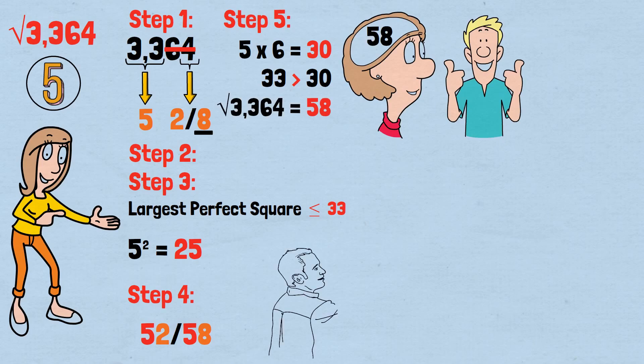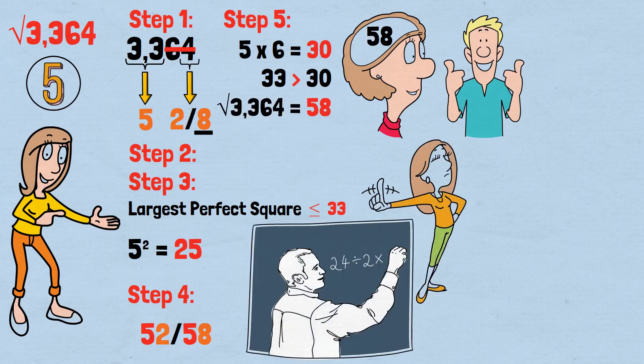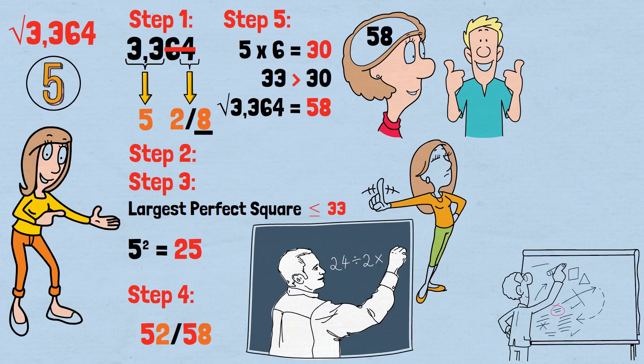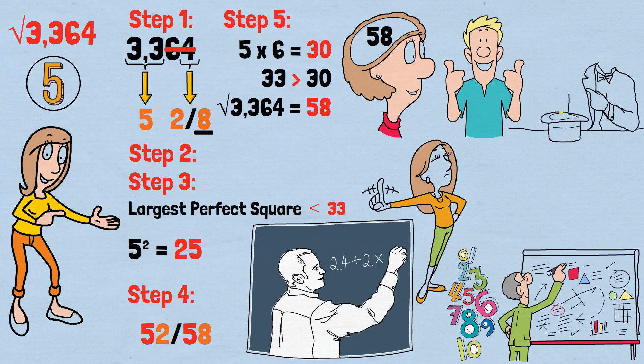The weird math of calculating square roots in seconds isn't really weird at all. It's the natural result of understanding and exploiting the hidden patterns that exist within our number system. What seems like magic is actually the inevitable outcome of mathematical logic, dressed up in an elegant procedural form.